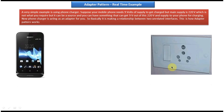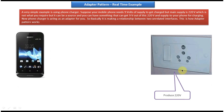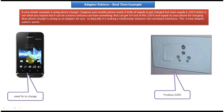Now we'll see one example of adapter design pattern. On the right side you can see an electric socket, and on the left side you can see a mobile phone. This electric socket produces 220 volts, and this mobile phone needs 9 volts to charge.